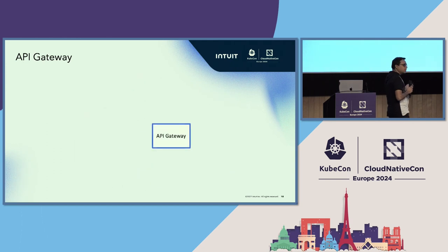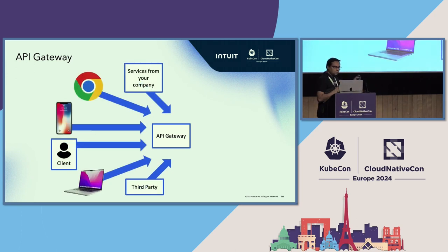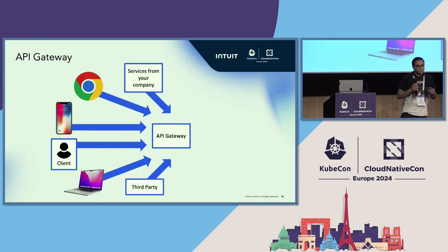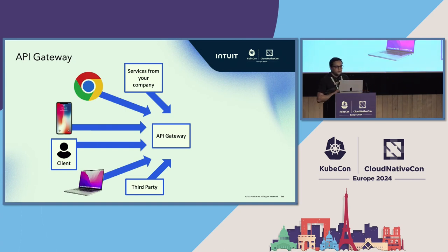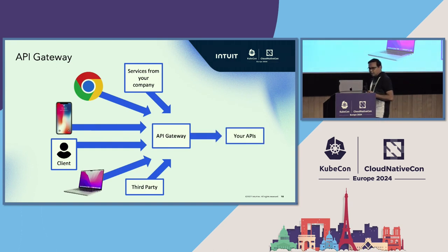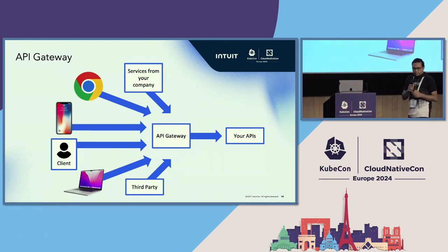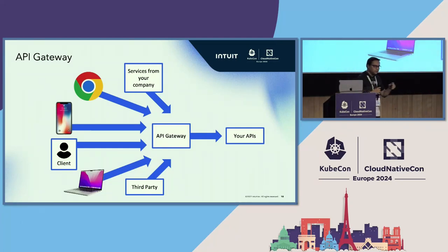The API Gateway takes care of traffic dialing, rate limiting, authentication, and authorization. All your clients connect to the API Gateway, it handles all those things, and then forwards the request to your backend service. At Intuit, we have been developing our own API Gateway for the last 10 to 12 years due to custom requirements, handling authentication, authorization, rate limiting, and more.